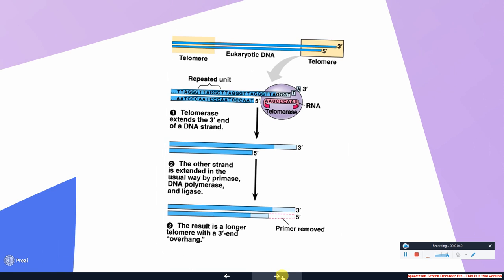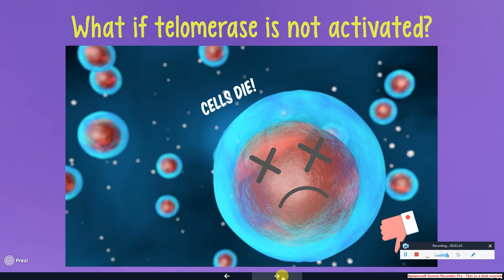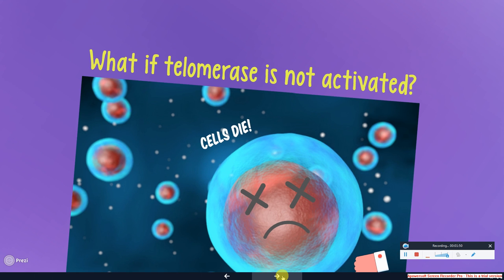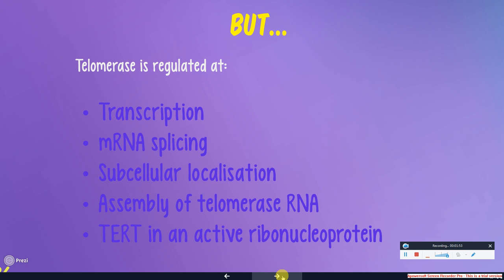However, if telomerase is not activated, then the cells will die due to shortened telomeres. Telomerase needs to be regulated at several points to avoid this. Telomerase is regulated at transcription, mRNA splicing, subcellular localization, assembly of telomerase RNA, and TERT active ribonuclear protein.